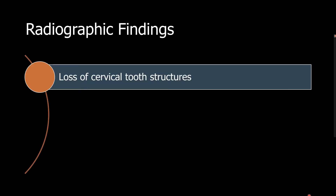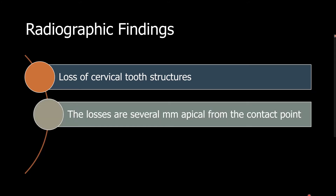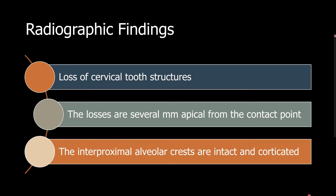In review, we have seen loss of cervical tooth structure both on the mesial and distal. We also saw that the losses are several millimeters from the contact points. We also saw that the interproximal alveolar crests are intact and corticated. With this information, we can develop a differential diagnosis.